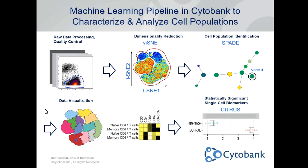This is an example data analysis pipeline using tools available in Cytobank; the goal of this particular pipeline was to characterize changes in single cell data. Today Vinko is going to detail how he used Cytobank to develop an analysis pipeline for unbiased discovery and visualization of differential cell populations from single cell data. In his workflow, he used FlowSome, and we have an API that can allow you to use tools not found inside Cytobank.